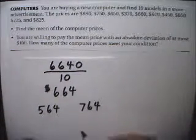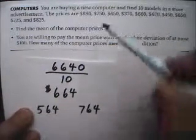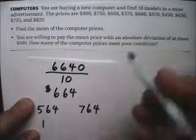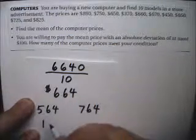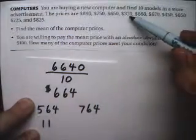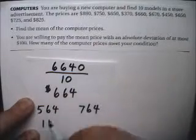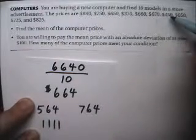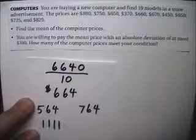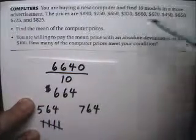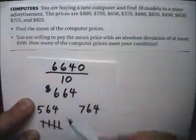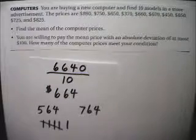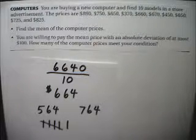Now they want to know how many of these computers meet your condition. The $650 one meets your condition. $890 is too much. $750 meets the condition. $650 meets the condition — it's between. $370 is too cheap. $660 meets the condition. $670 meets the condition. $450 is too cheap. $650 meets the condition — that's five. $725 meets the condition, and $825 is too much. So we counted and got six computers that meet your condition.